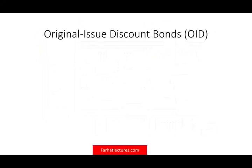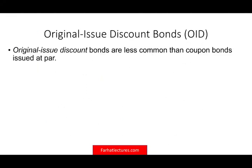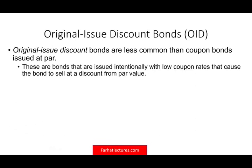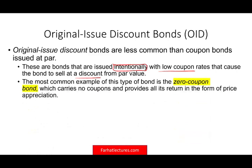So let's talk about the original issue discount bond. Basically they're less common than the coupon bond. These bonds are issued intentionally on purpose with low coupon rates, or often there's no coupon stated — but a low coupon rate that causes the bond to sell at a discount from par value. The most common type of these bonds is called the zero coupon bond, which carries no coupon — no coupon at all.